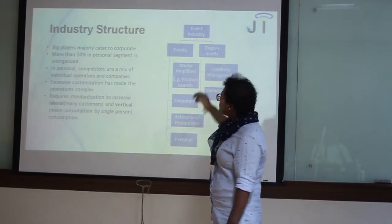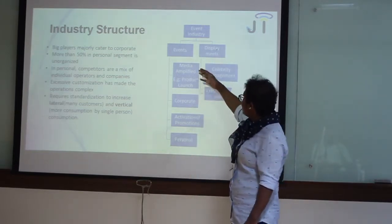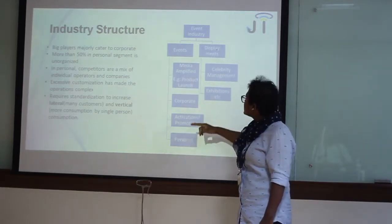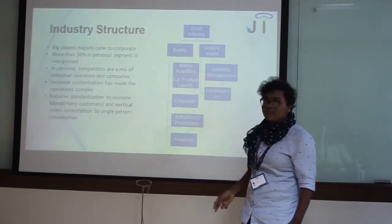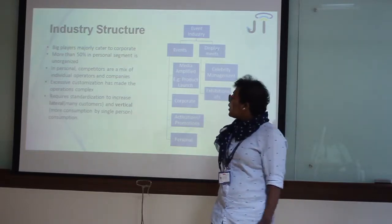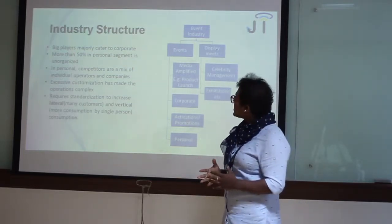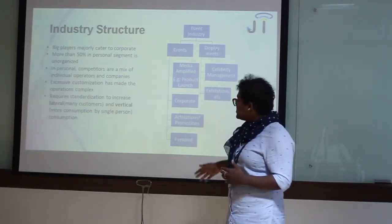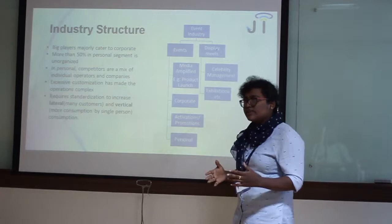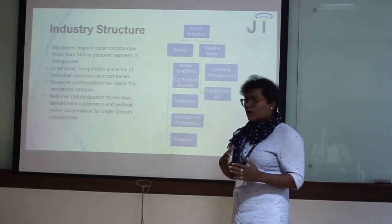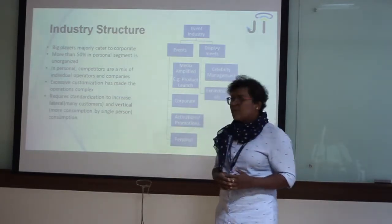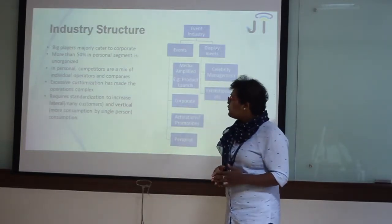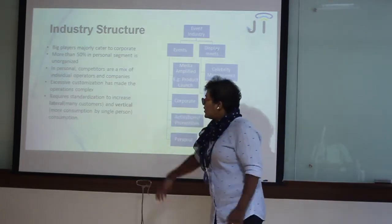Industry structure: The event industry is divided into events and display means. Under events, it is media-amplified, corporate, activation, and personal. Under display means, it is celebrity management and exhibitions. Corporate events are well organised and big companies handle corporate events. Whereas in personal events, 50% of events are not well organised and they are complex. Hence, there is a need for organisation in this space to increase consumption.